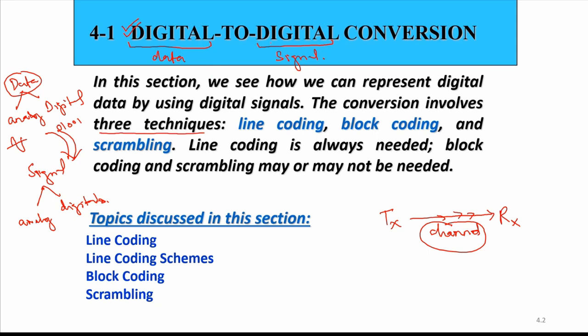For converting digital data to a digital signal, we have three different methods: line coding, block coding, and scrambling. Line coding is always needed — whenever we want to send data through the channel, we must first do the line coding. Block coding and scrambling come after, and may or may not be needed.